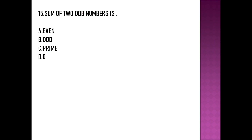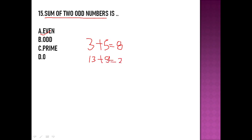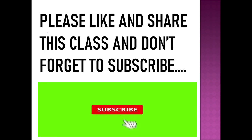The next question asks about the sum of 2 odd numbers. Every sum of two odd numbers is always even. For example, 3 plus 5 equals 8, and 13 plus 9 equals 22 — both results are even. So the sum of two odd numbers is always even, and option B is the right answer.